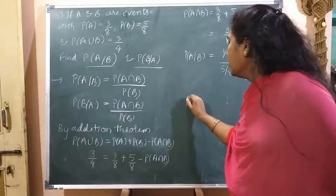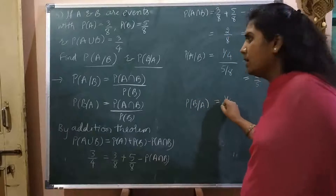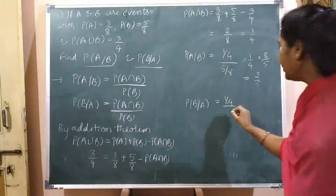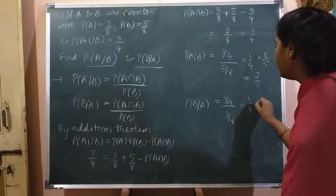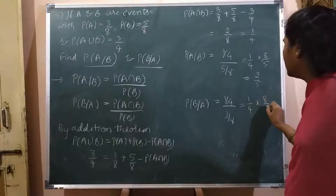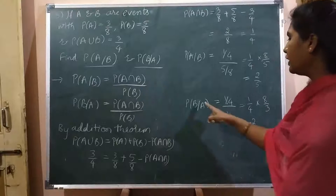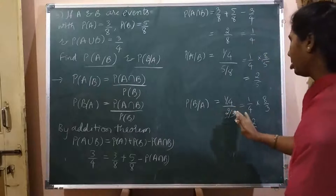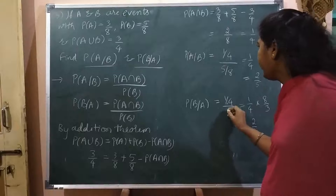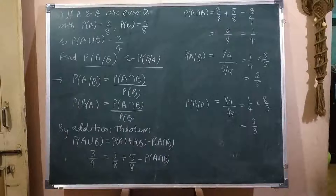Next, P of B given A. That is P of A intersection B divided by P of A, which is 1 by 4 divided by 3 by 8, equal to 1 by 4 times 8 by 3, which equals 2 by 3. So P of B given A equals 2 by 3. Thank you.